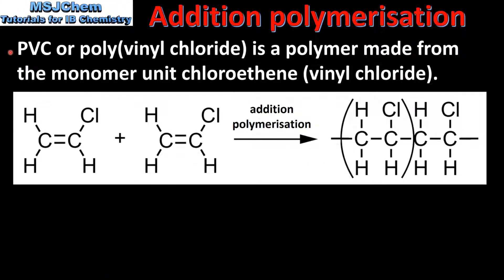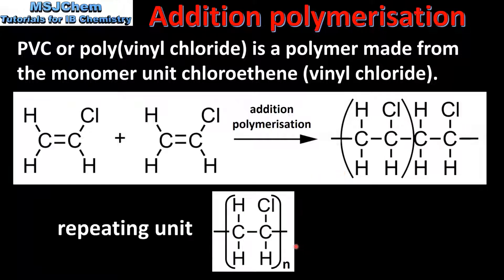The next example is PVC, or polyvinyl chloride. PVC is an addition polymer made from the monomer unit chloroethene. Here we can see the reaction of two molecules of chloroethene to produce the polymer polyvinyl chloride. And here we have the repeating unit.